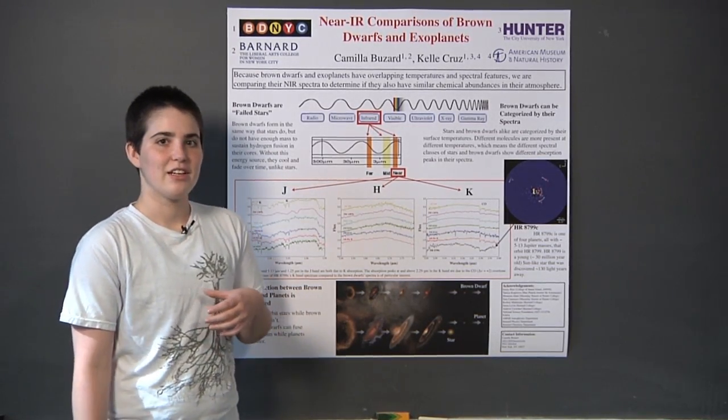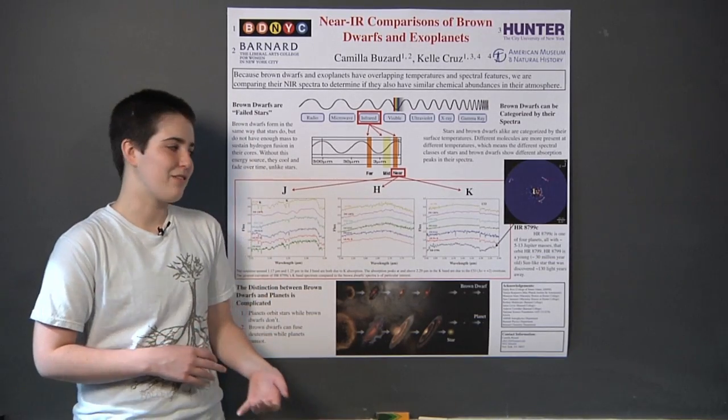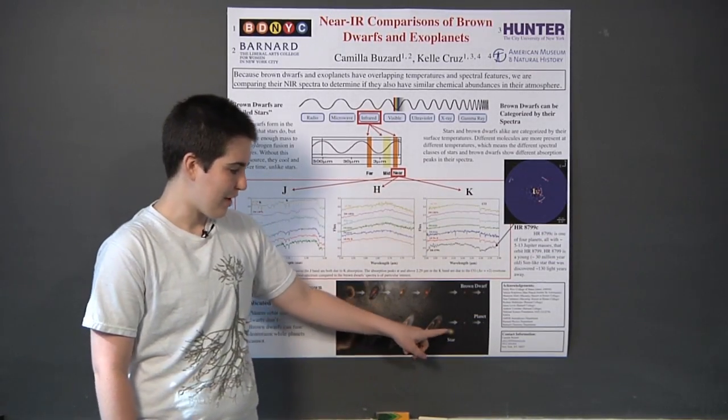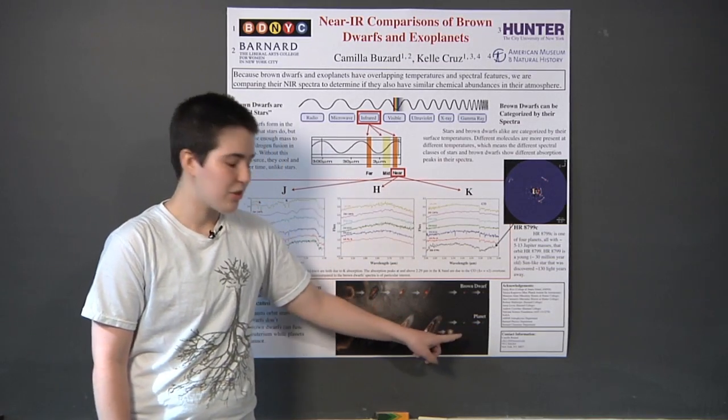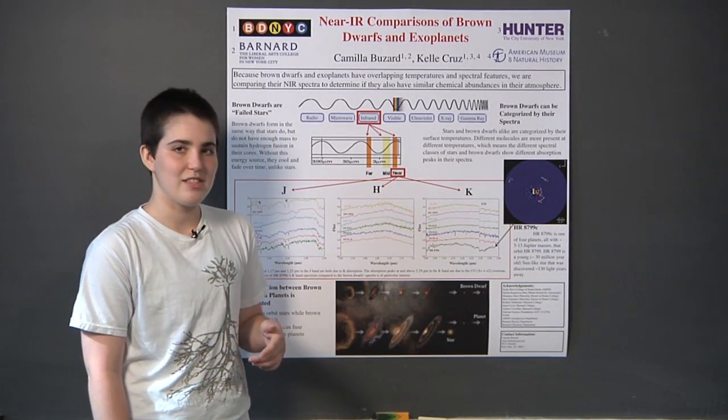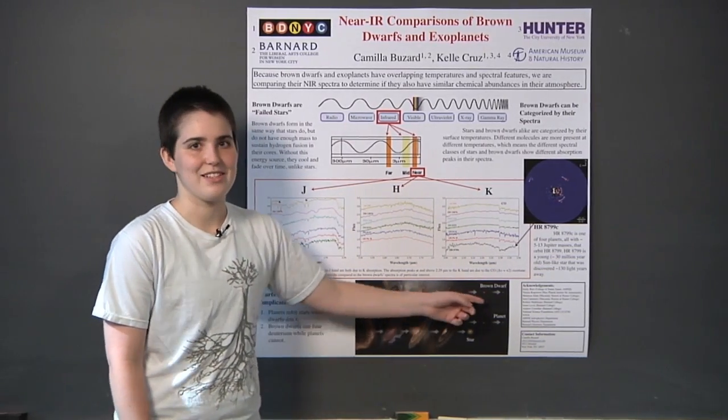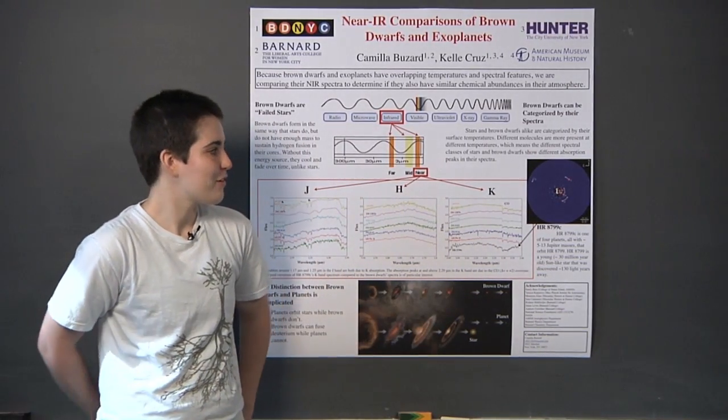Brown dwarfs are also different than planets for several reasons. One is that they form in a different way. This middle line shows how a planet forms from just the gas and dust that's around a star, and that's not the same as how the brown dwarf forms.